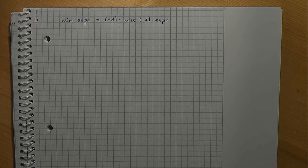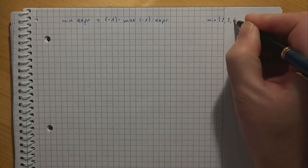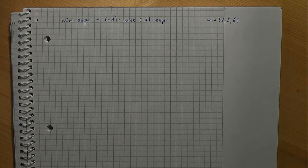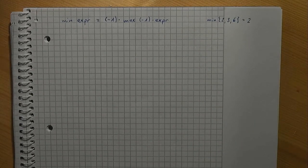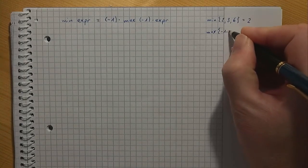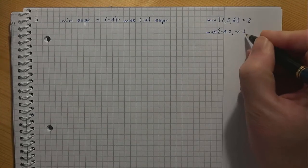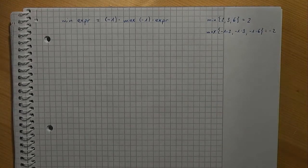To convince yourself that this is valid, consider a small example. What is the minimum of, let's say, two, three, and six? Well, it's two of course. Now let's check: what is the maximum of minus one times two, minus one times three, and minus one times six? The answer is minus two, because minus two is greater than minus three and minus six. In both cases, two is the element that defines the optimum.